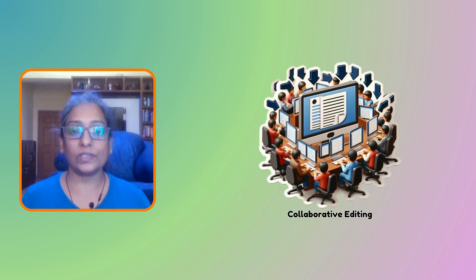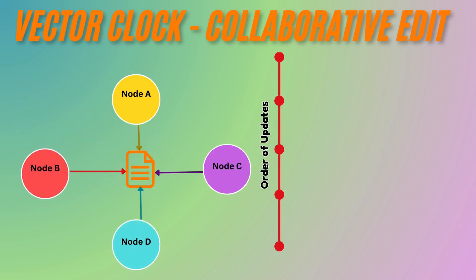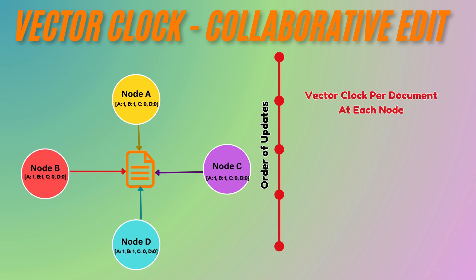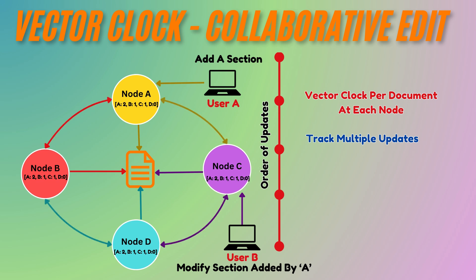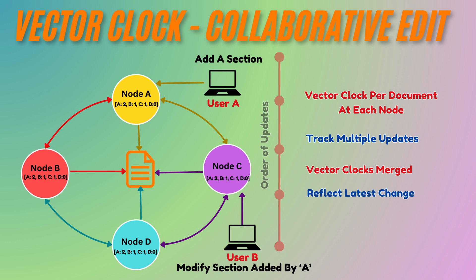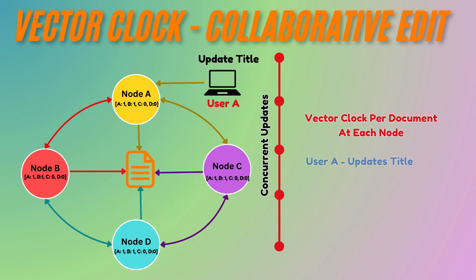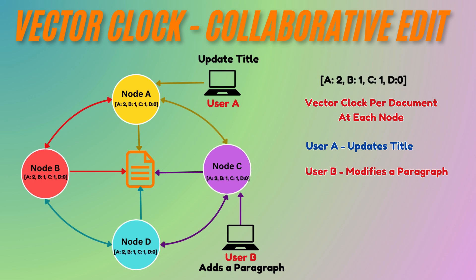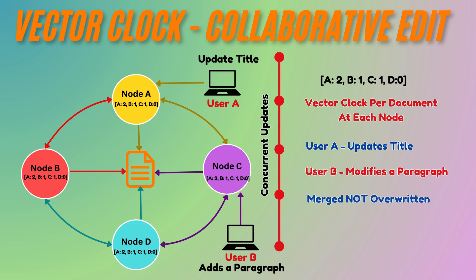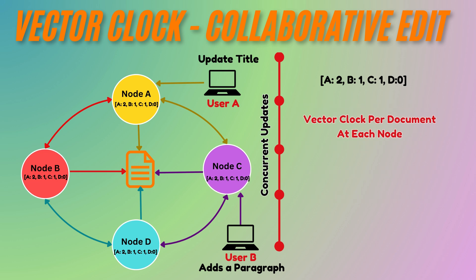Since traditional timestamps fail to accurately track the order of edits in a shared document, we rely on vector clocks. In a collaborative editing application, each document has its own vector clock, which helps track updates from multiple users. Each node's state is tracked by a vector clock, and when nodes share updates, their vector clocks are merged, reflecting the latest state of each user's changes. For example, User A updates the title, incrementing their counter; User B adds a paragraph, incrementing their own counter. When these updates are exchanged, vector clocks help identify that both changes were independent, prompting a merge rather than an overwrite.